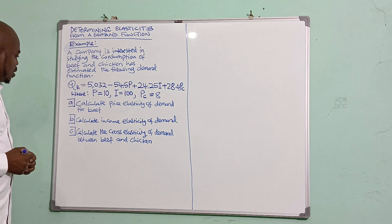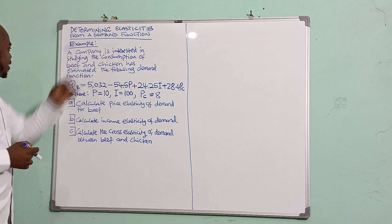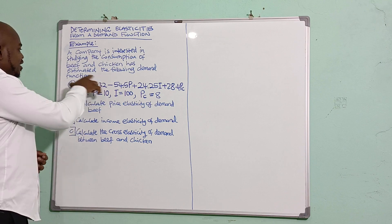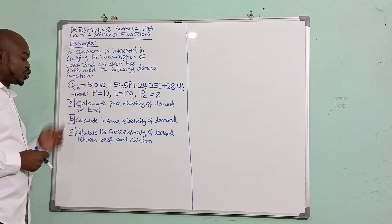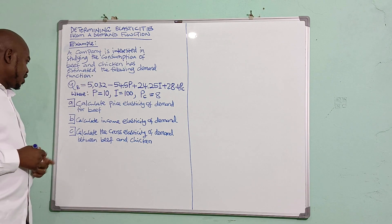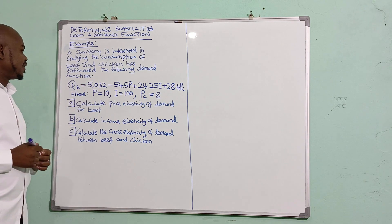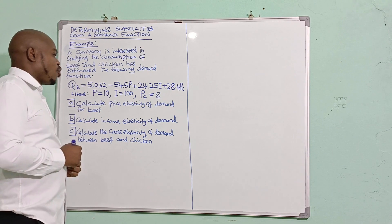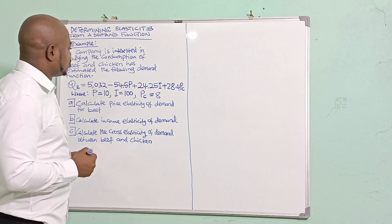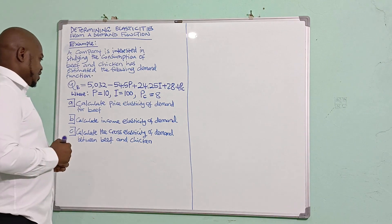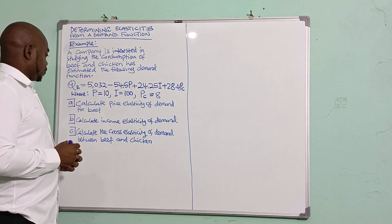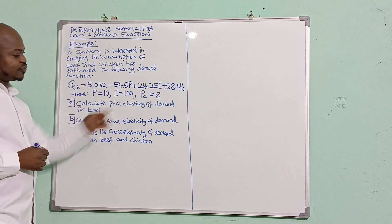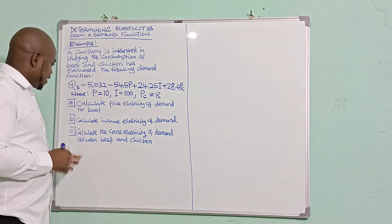A company is interested in studying the consumption of beef and chicken and has estimated the following demand function. The quantity of beef is given as: Q = 5032 minus 54.5P plus 24.25I plus 28.4PC, where P (price of beef) equals 10, income I equals 100, and the price of chicken PC equals 8.